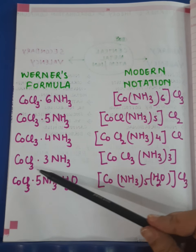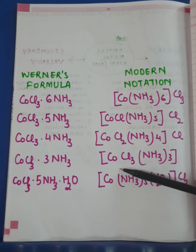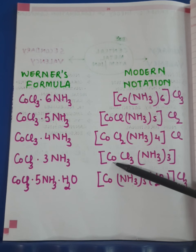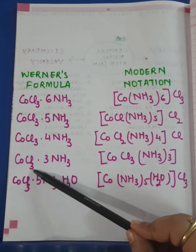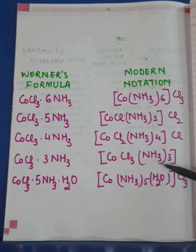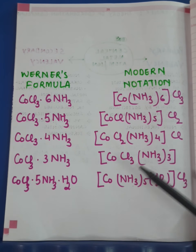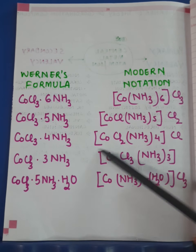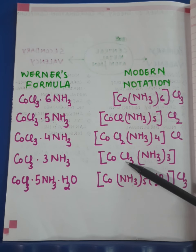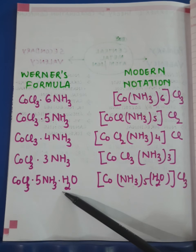The fourth example is CoCl₃·3NH₃. In modern notation, cobalt's coordination number is six, so three ammonia molecules and three chloride ions together total six, fulfilling cobalt's coordination number. All three chloride ions and all three ammonia molecules are enclosed in the square bracket along with cobalt, forming the coordination sphere. This compound will not have any ionization sphere.